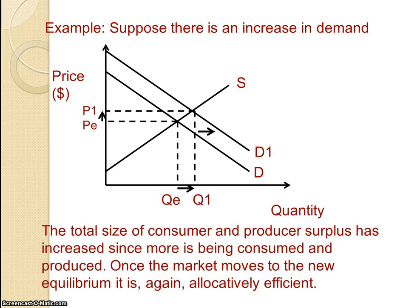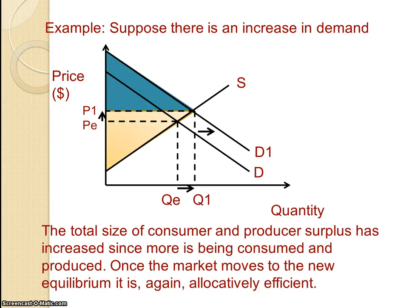As an example, suppose there was an increase in demand, giving us a new price and new quantity. The total size of consumer and producer surplus has increased, because there's more being consumed and produced. Once the market moves to the new equilibrium, it is again allocatively efficient. We've got a new area of consumer surplus which is bigger than the previous one, and a new area of producer surplus which is also bigger. In this case, the producer surplus has actually eaten up some of the consumer surplus area, but consumer surplus has still increased because of the higher demand.